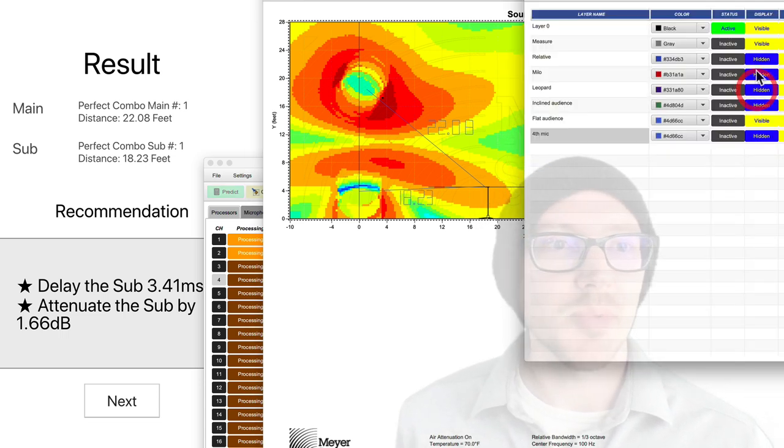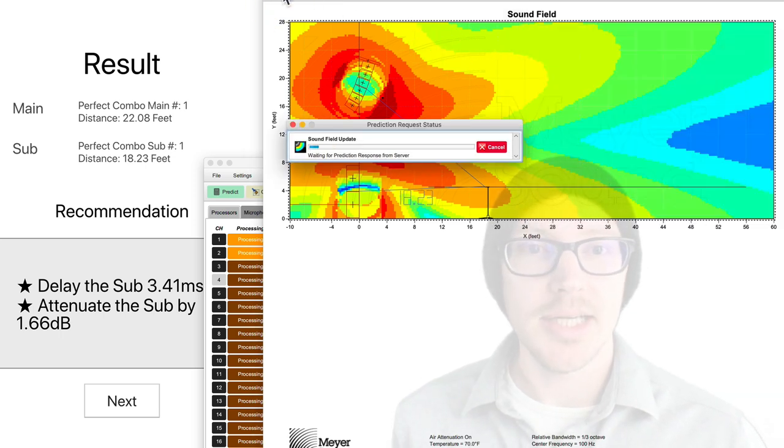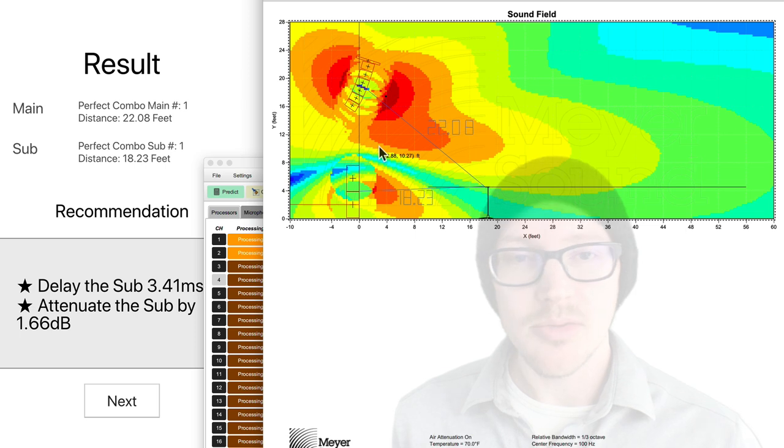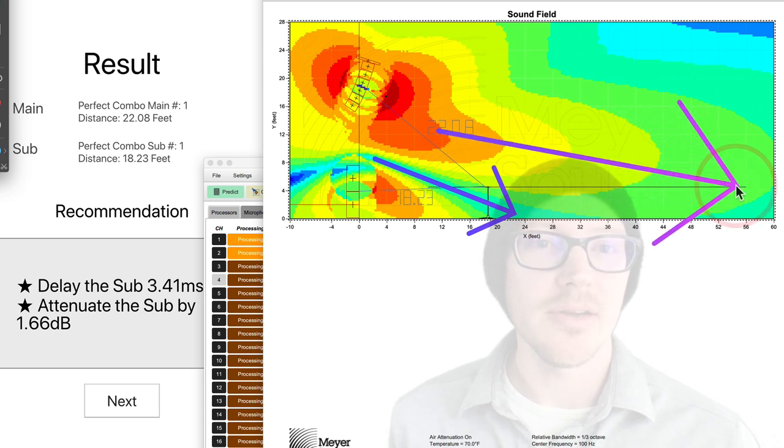So let's look at our second speaker array. This is the Milo and the 650p. And I'll hit predict. And this is a little bit different story, right? So now we've got cancellation through part of the audience and we've got summation through another part of the audience.